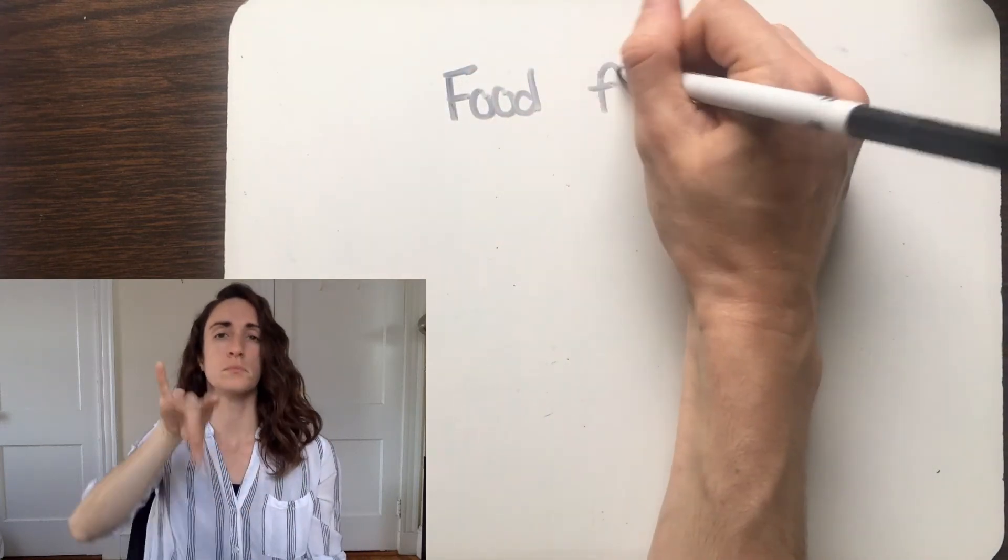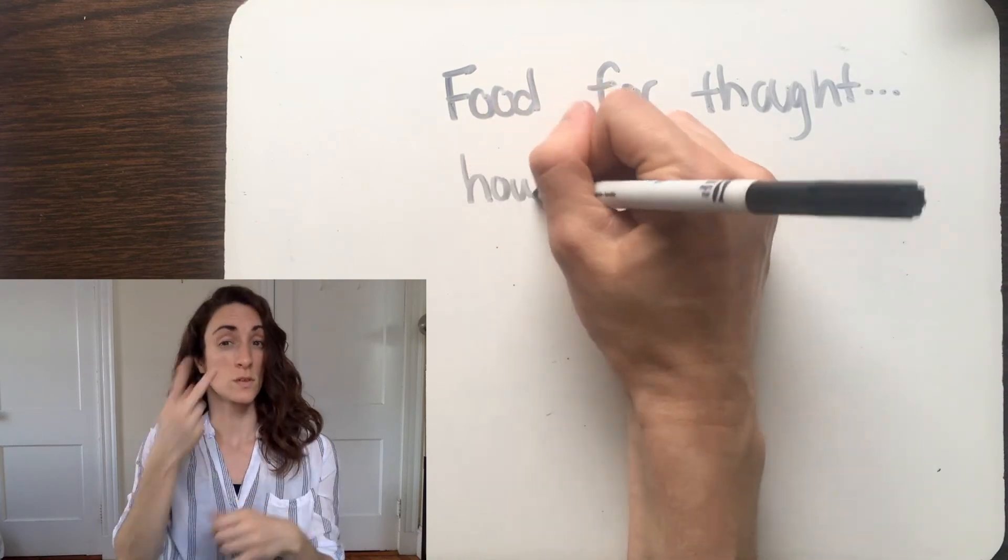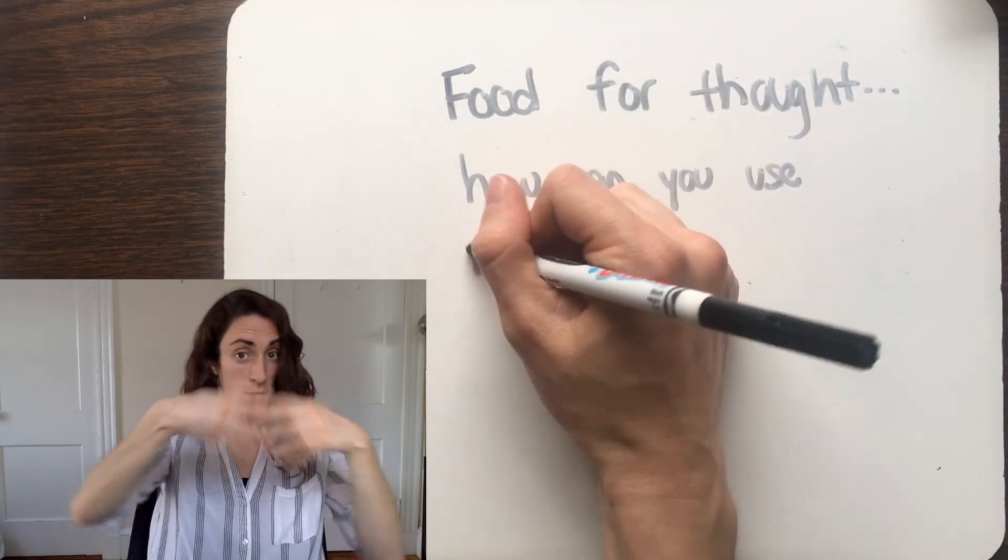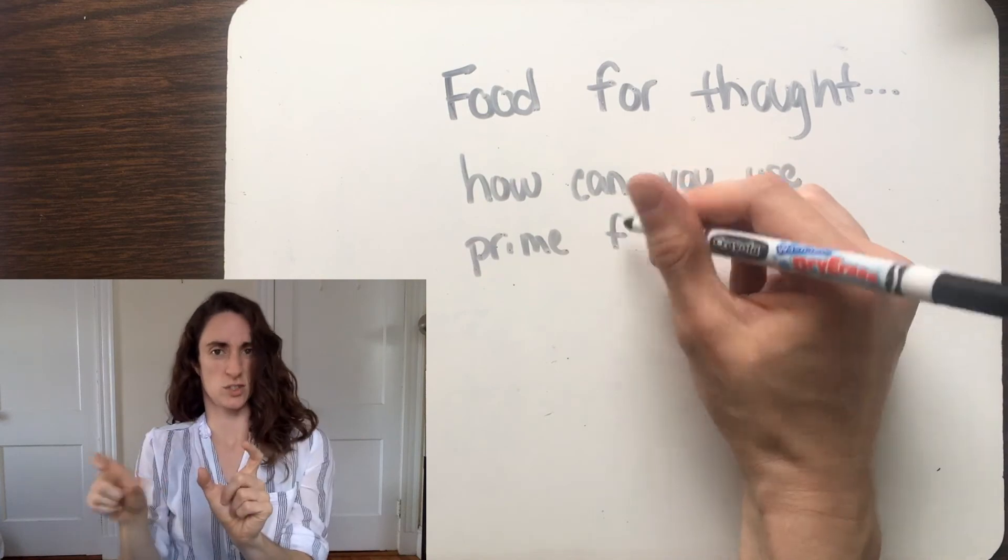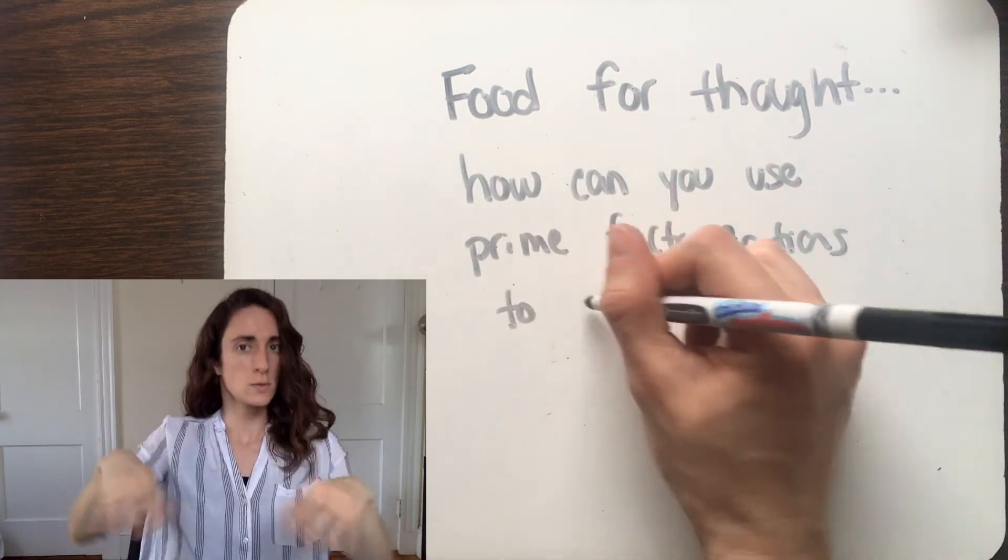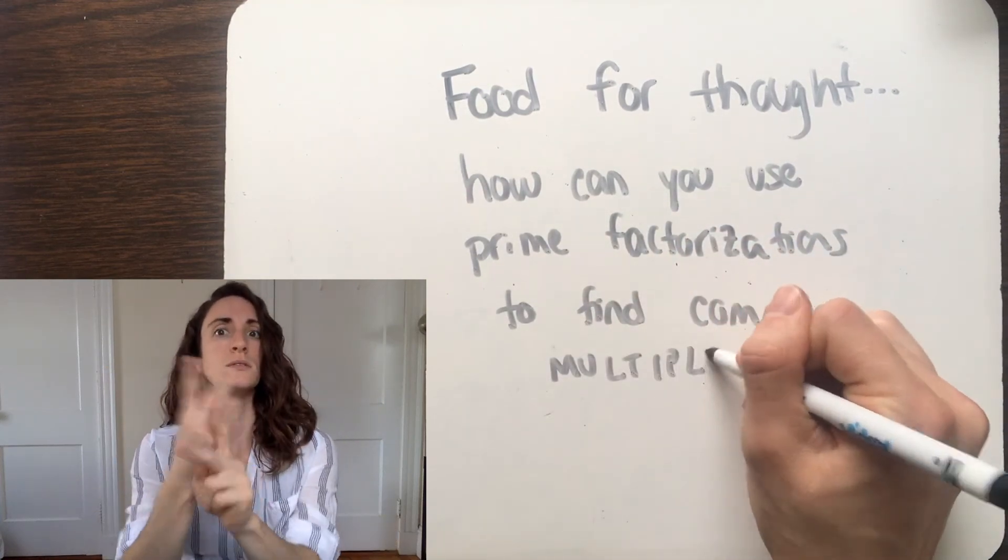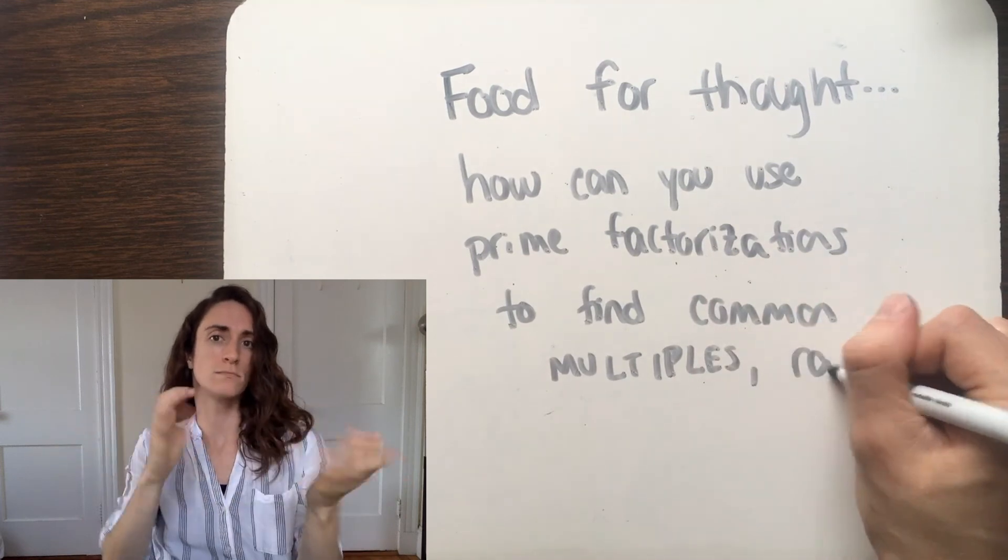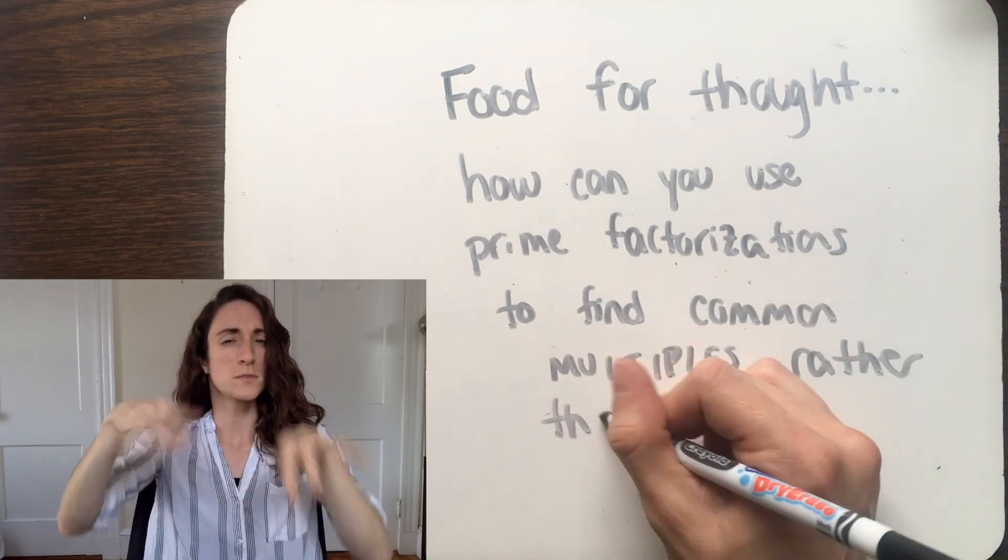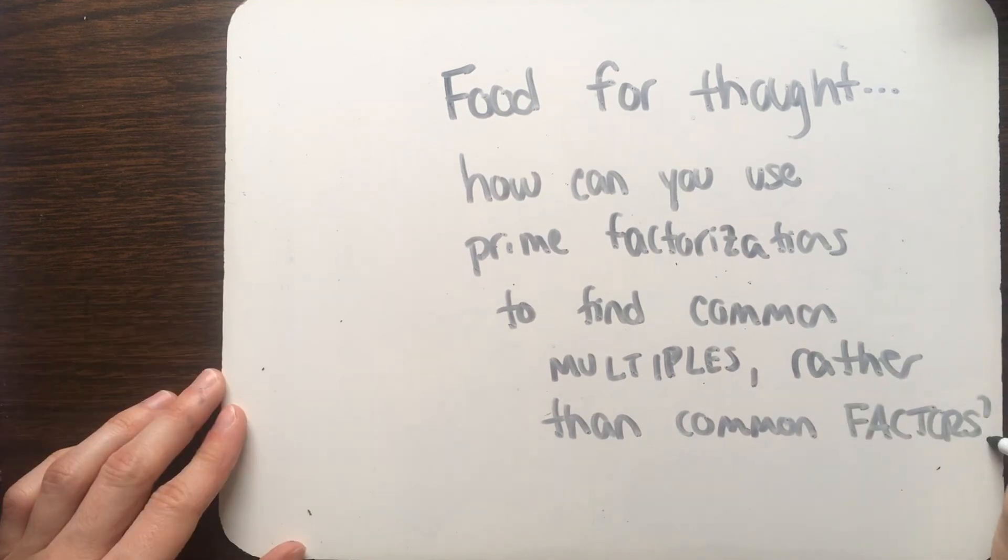Before we wrap up, I want to put a question out there for you to think about. Now you've seen how you can use the prime factorization of a number to compare it to other numbers and find similarities between their factors. How do you think you could use prime factorization to find similarities between the multiples of numbers? If you're curious to find out about that, check out my next video. I hope you enjoyed this video and thank you so much for watching.